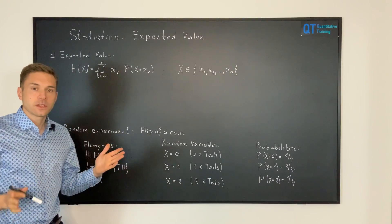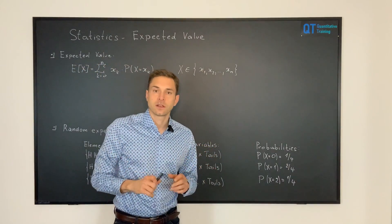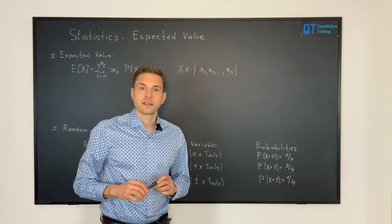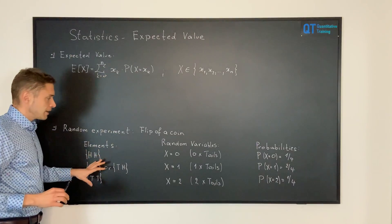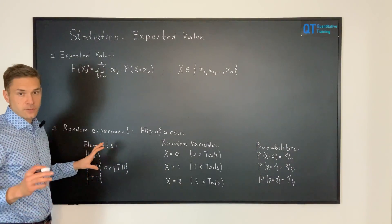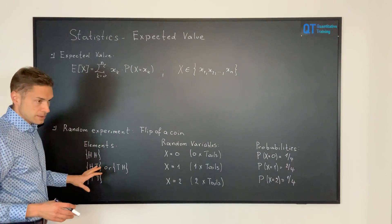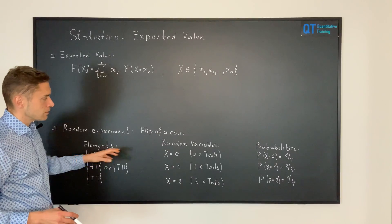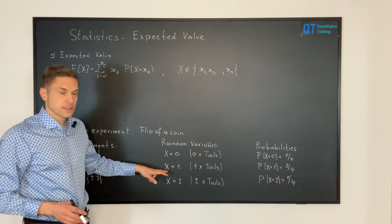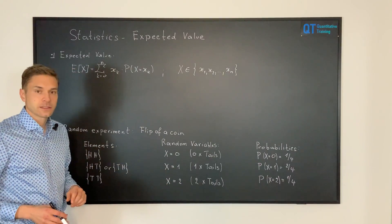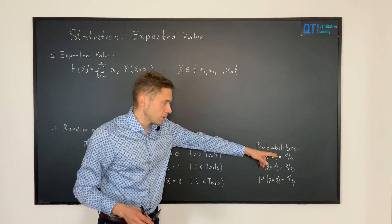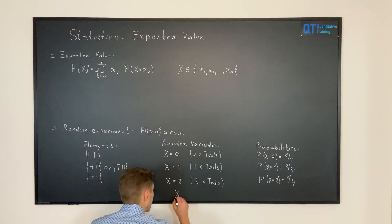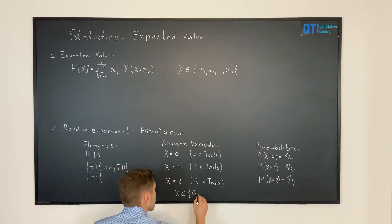In order to develop an intuitive feeling for what the expected value is, we are going to consider the example of flipping a coin two times, already introduced in previous lectures. We have the sample space of this random experiment with four different elements. For zero times tails, x equals zero; for one time tails, x equals one; and for two times tails, x equals two. The corresponding probabilities are: p of x equals zero is one-fourth, p of x equals one is one-half, and p of x equals two is one-fourth. So the random variable x belongs to the set of zero, one, two.